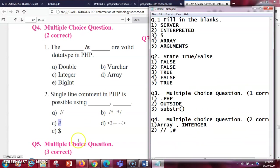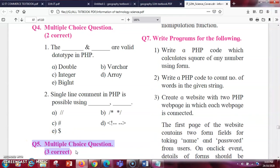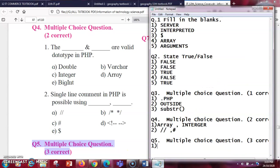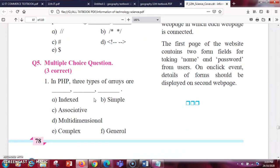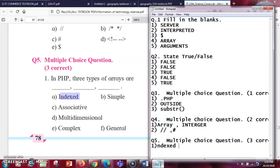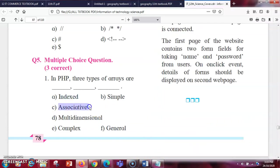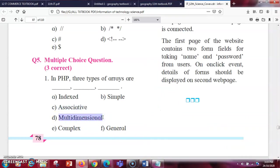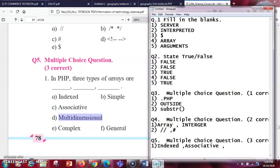Next MCQ with three correct options. In PHP, there are three types of arrays. In PHP we have the array section where we have indexed array, that is option number one, then we have the associative array, that is option number C, and then finally we have the multidimensional array, that is option number D.